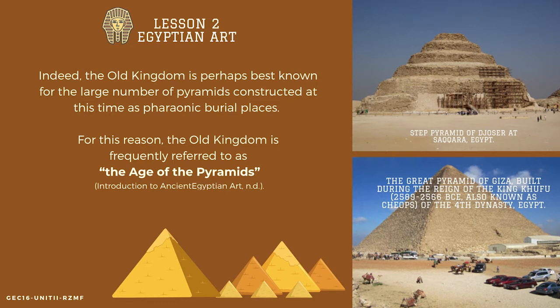Look at the pyramids on the side. The first one is the step pyramid of Djoser at Saqqara, Egypt. The second photo is the Great Pyramid of Giza, built during the reign of King Khufu, 2589–2566 B.C.E., also known as Cheops, of the 4th dynasty, Egypt.